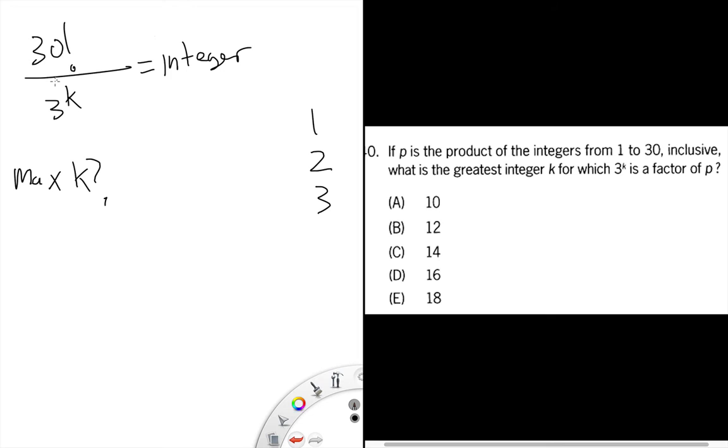So the labor-intensive way of doing this is to list out all the numbers divisible by three and count the threes that are in there, remembering that some numbers have more than one three - some have two threes, some have three threes - and then you need to add all these up.